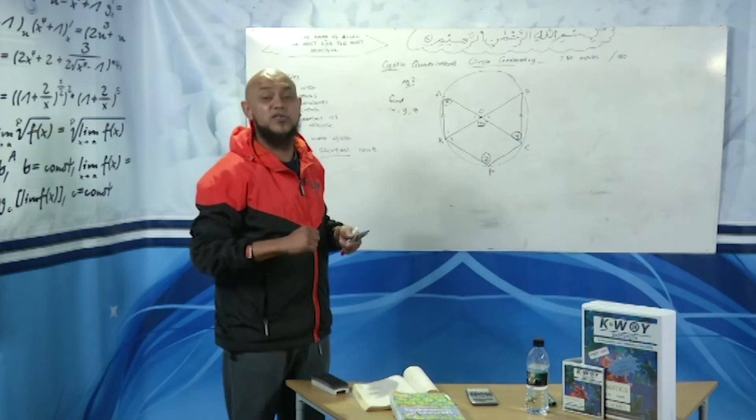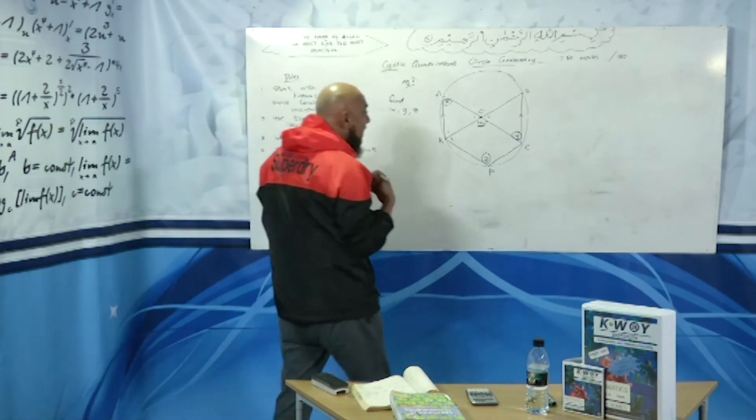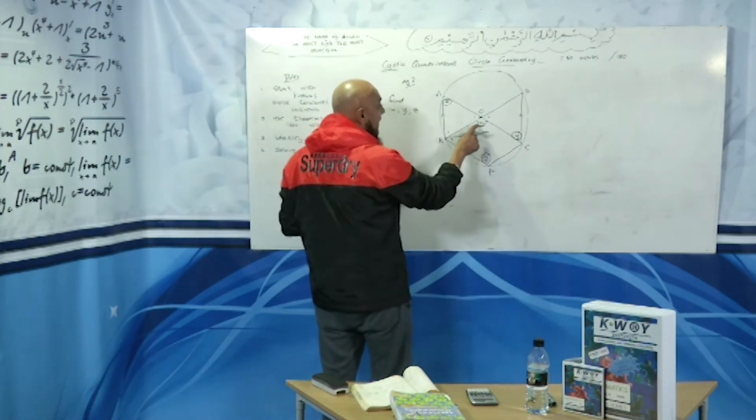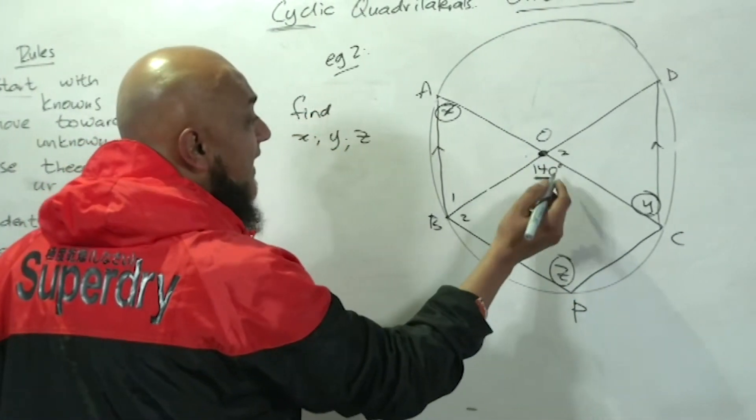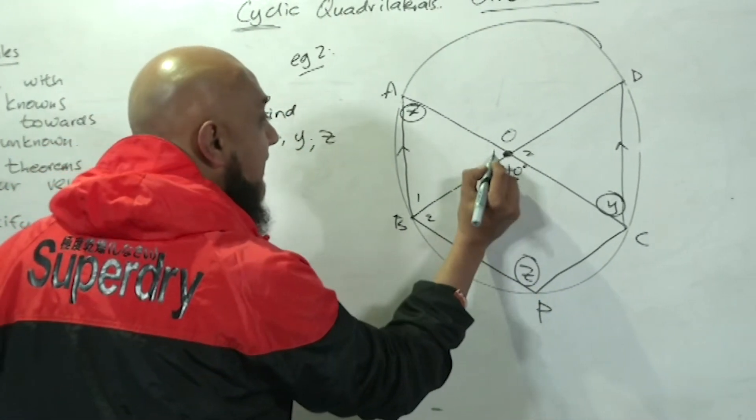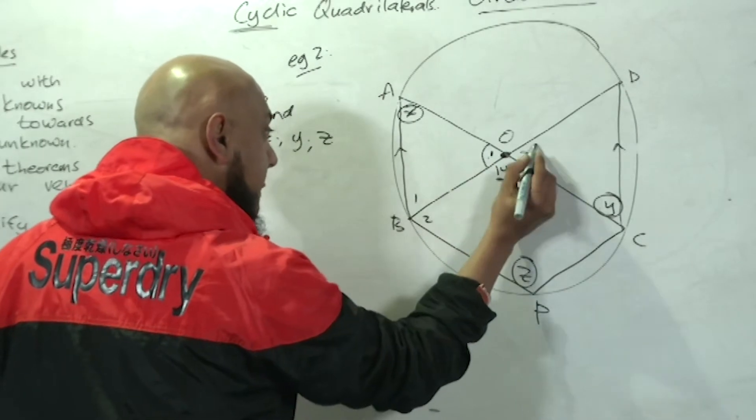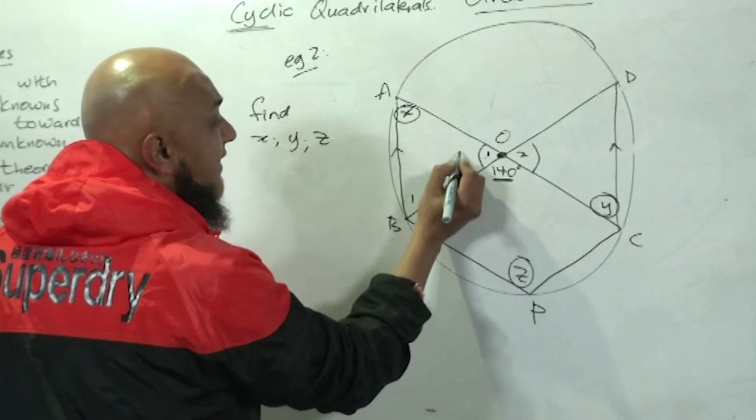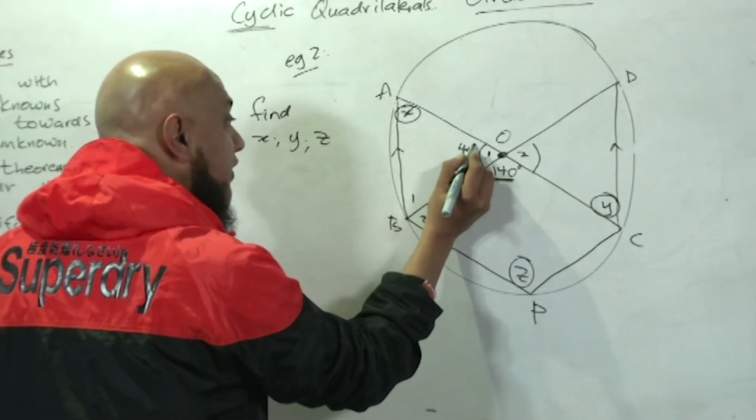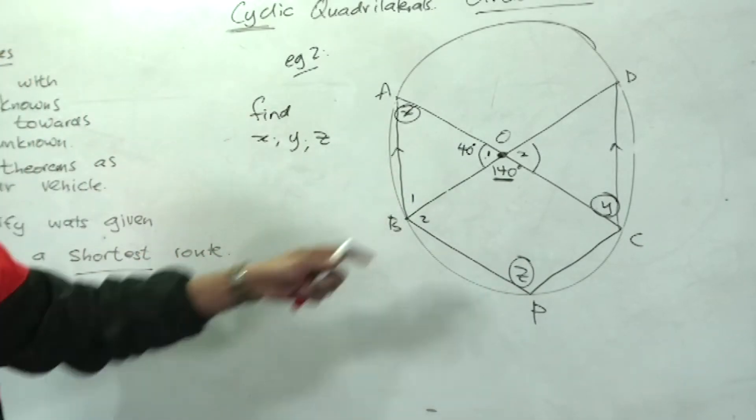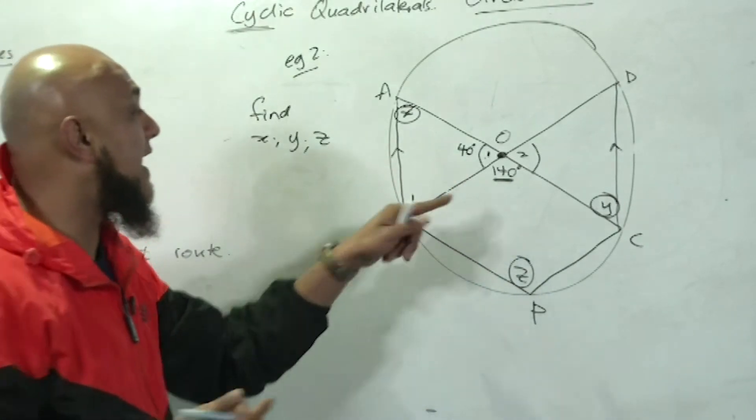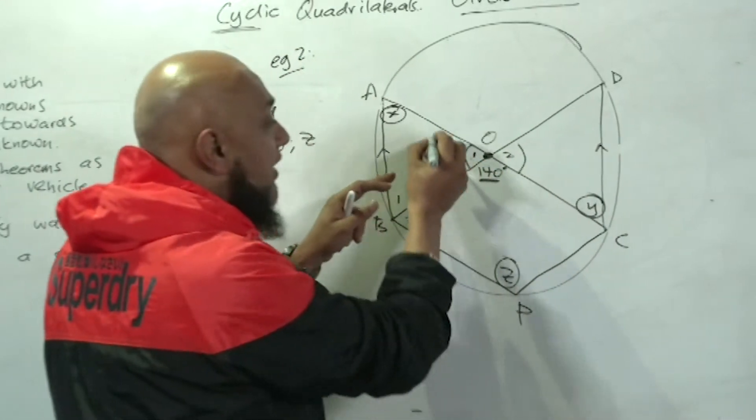Let's start with where I would start first. I know that this is 140 degrees. If this is 140 degrees, therefore that must be 40 degrees. Angles on a straight line add up to 180.